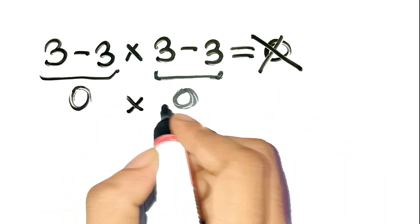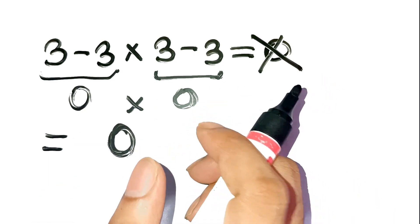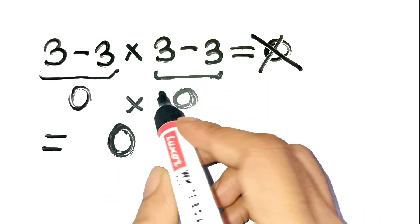Multiply the zeros together, and boom! Zero. Makes sense at first glance, right? Well, not quite.